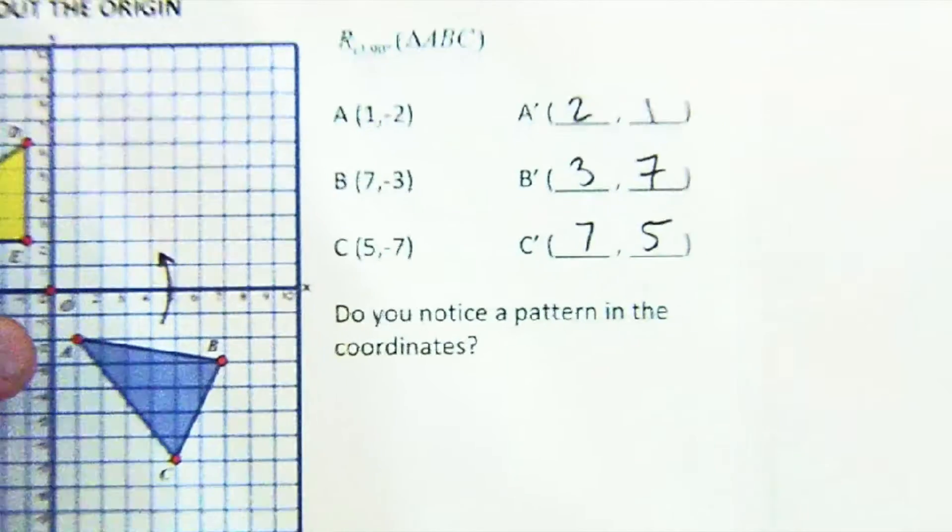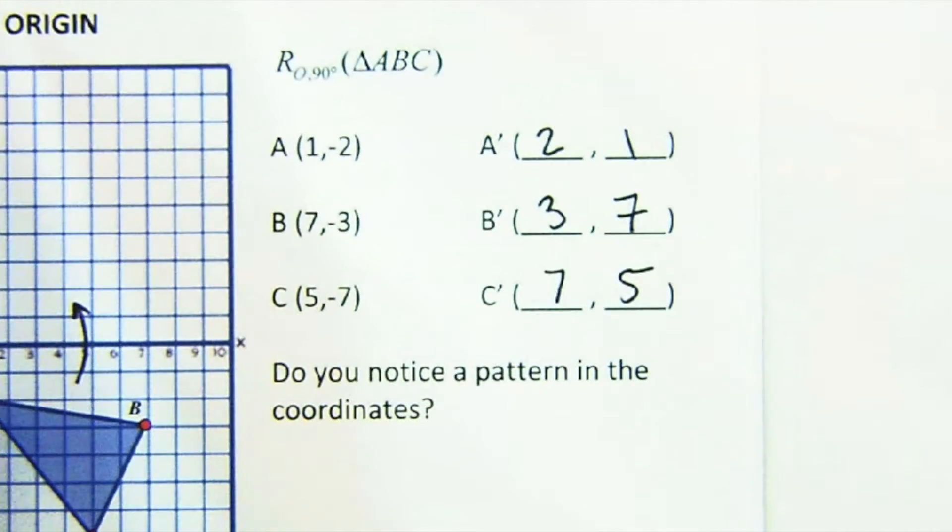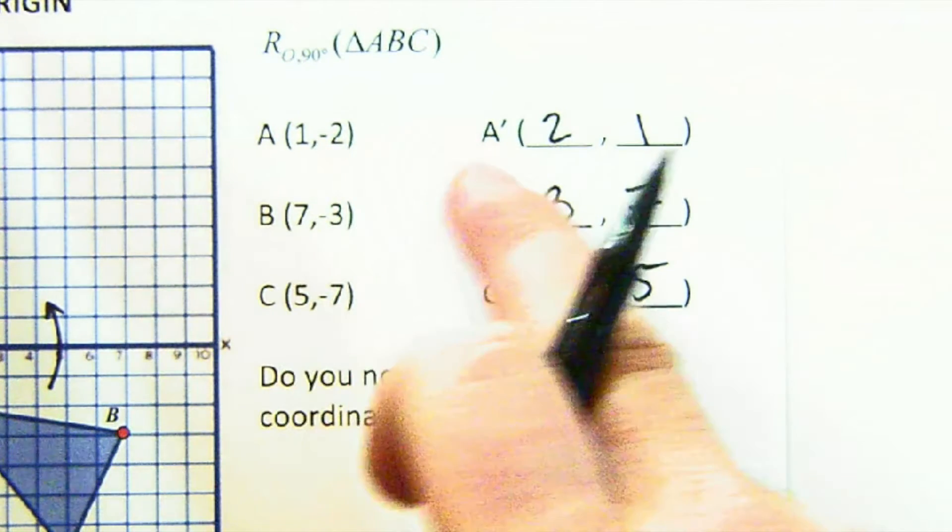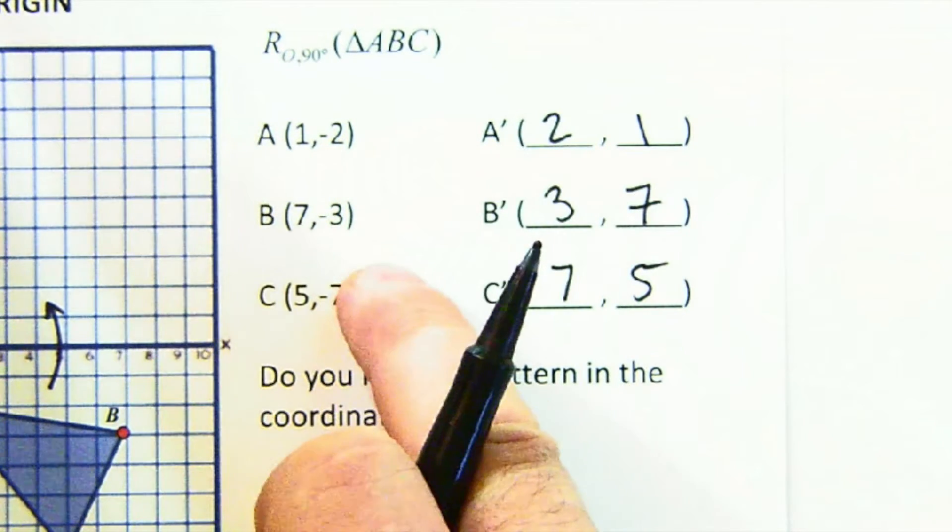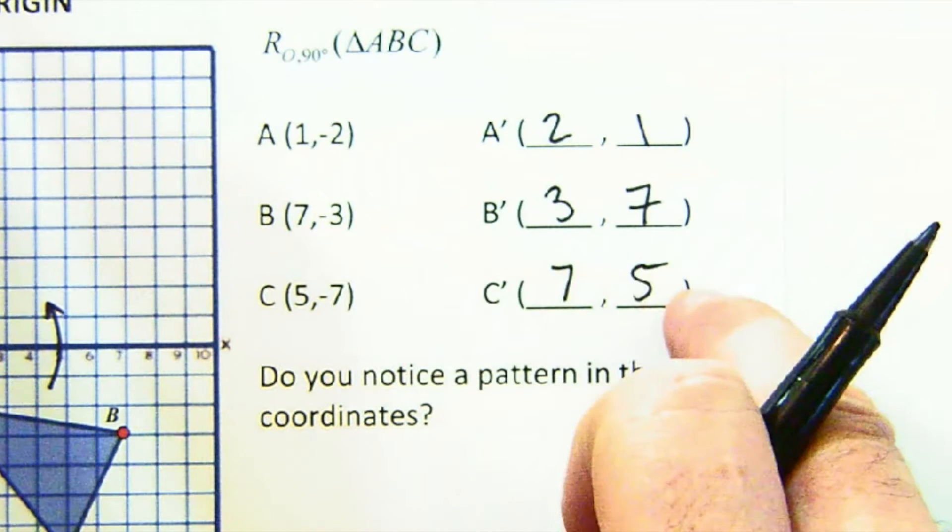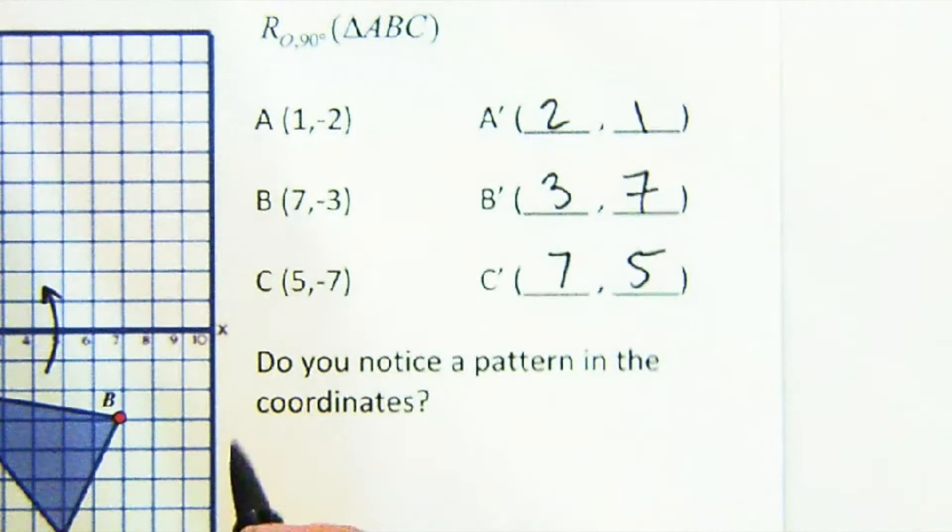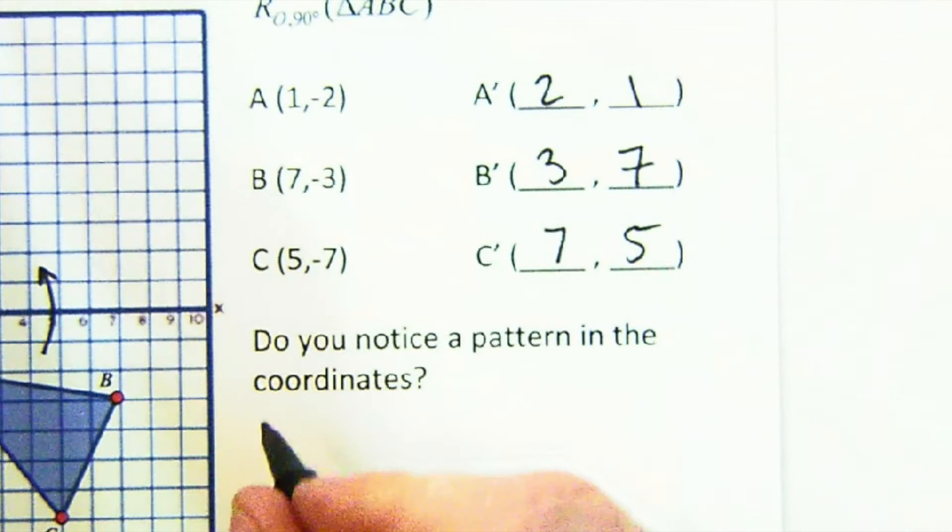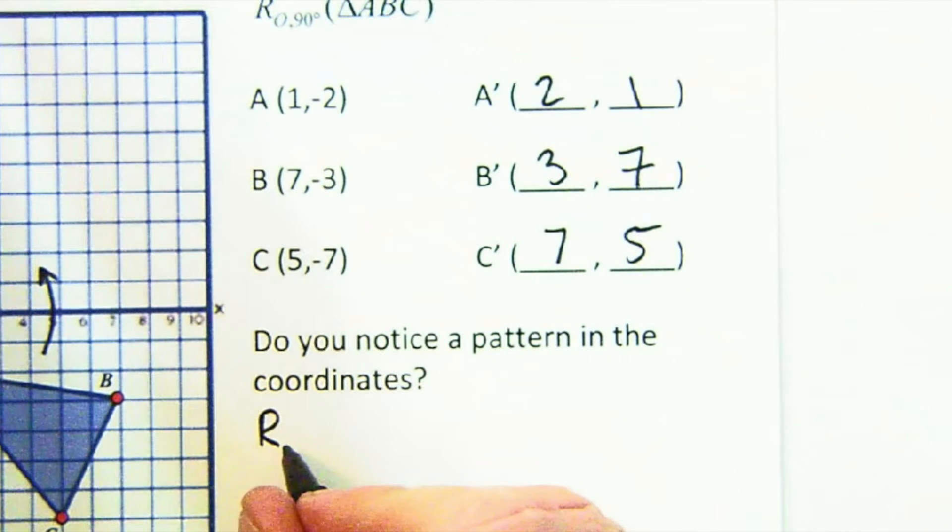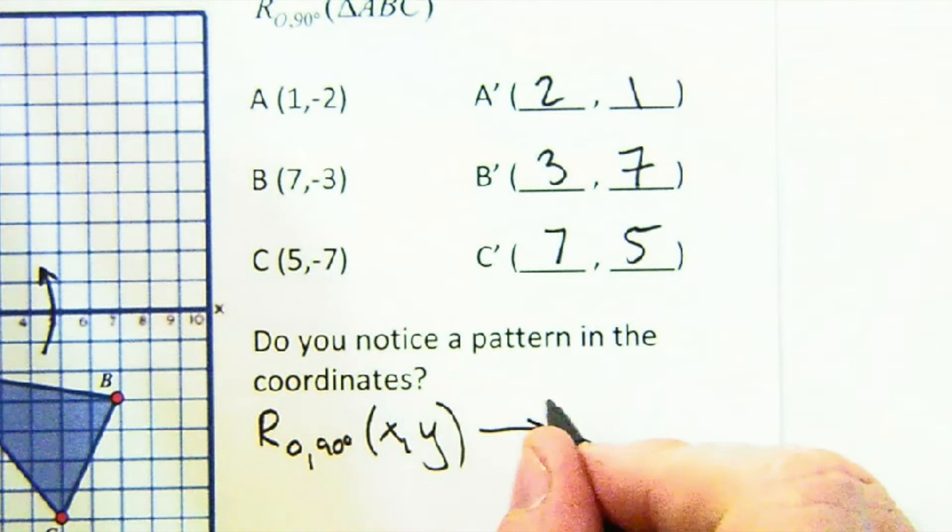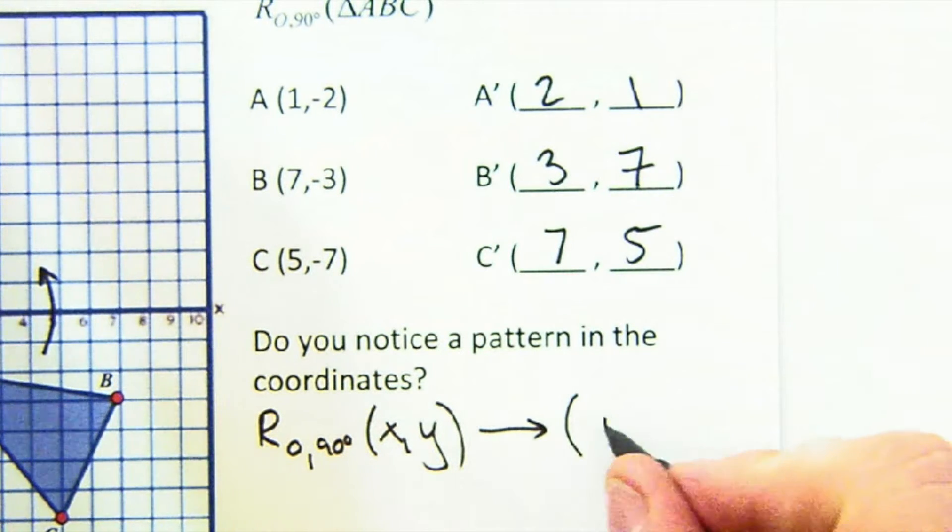See how quick I am now with a little help of patty paper. Now what's happening here? Let's look closely. (1, -2) goes to (2, 1), (7, -3) goes to (3, 7), (5, -7) goes to (7, 5). The first thing I think you would notice with me is that a rotation about 90 takes every point (x, y) and it switches them, doesn't it? To (y, x).